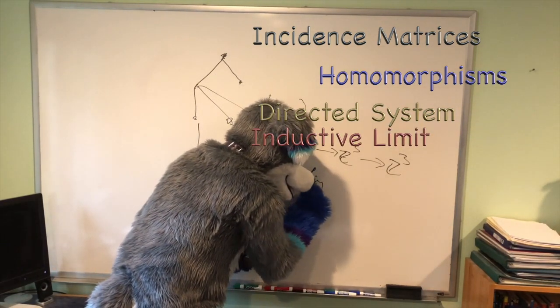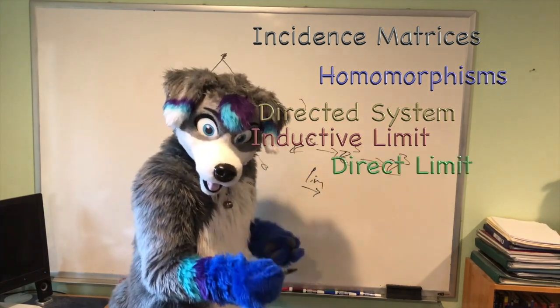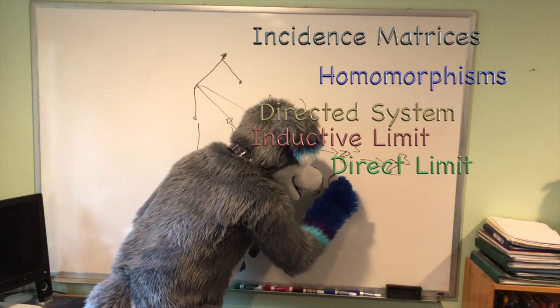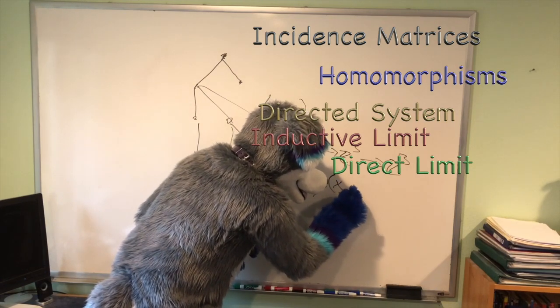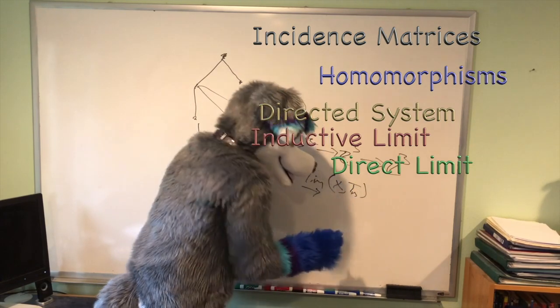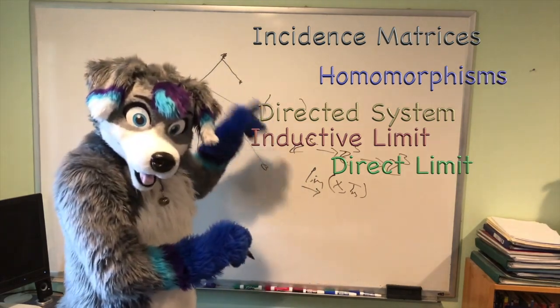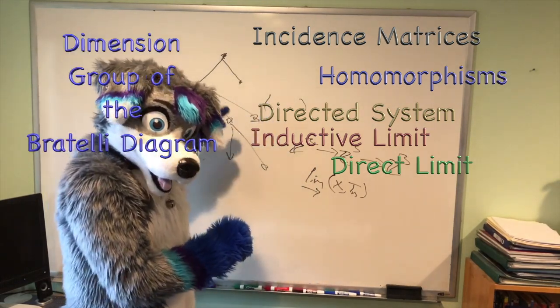in between each group in your directed system, and you can look at the inductive limit of this system. The inductive limit, sometimes called the direct limit, which you might know, of this system. Here, I'll just use this as your map. And if you look at this, this is what's called the dimension group of the Bratteli diagram.